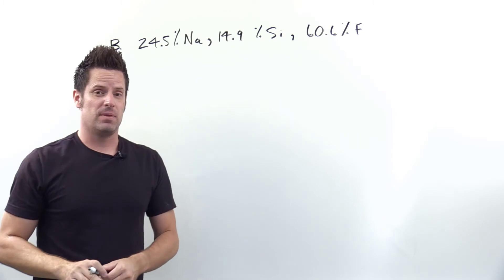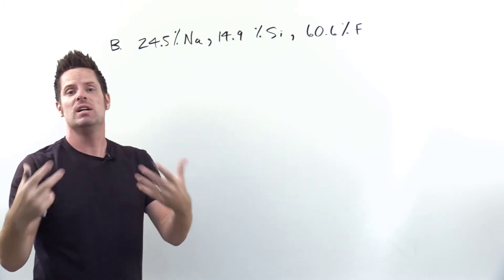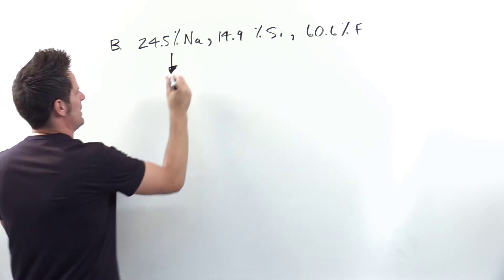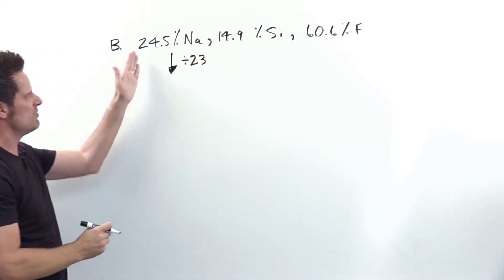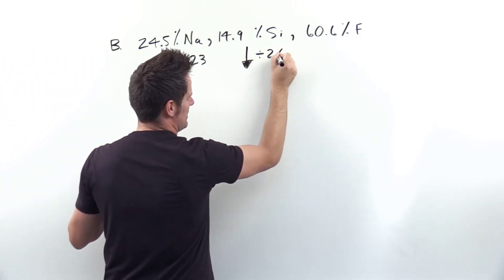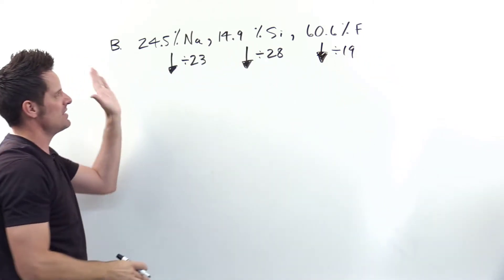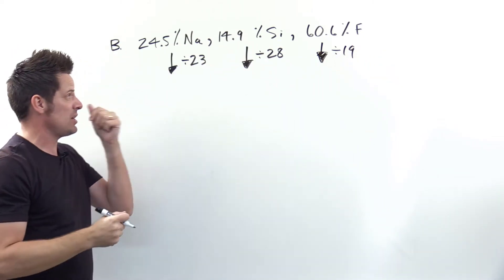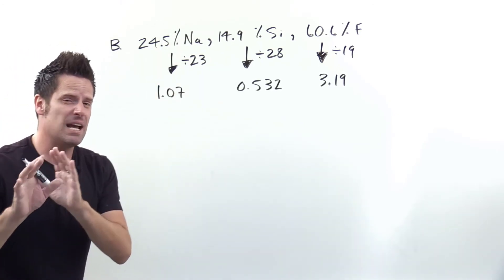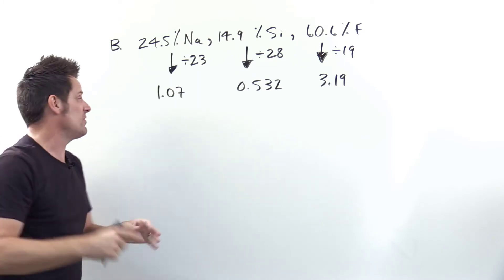Now on to part B. Step one: take each of the element's percentages and divide them by that element's atomic weight. Sodium's atomic weight is about 23, so we divide by 23. Silicon's atomic weight is about 28, so we divide by 28. Fluorine's is about 19, so we divide by 19. When we do that we end up getting the numbers shown here. Now step two: look at the numbers you just got and ask yourself which of them is the smallest.